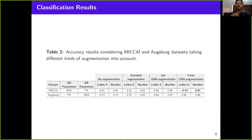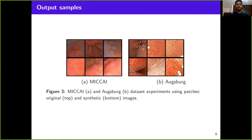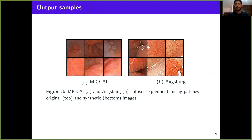Here you can see some synthetic samples alongside original samples — the first row shows original samples and the second row shows synthetic samples. You can see how similar, trustworthy, and high-quality the outcome is with the GAN technique applied to our problem and context.